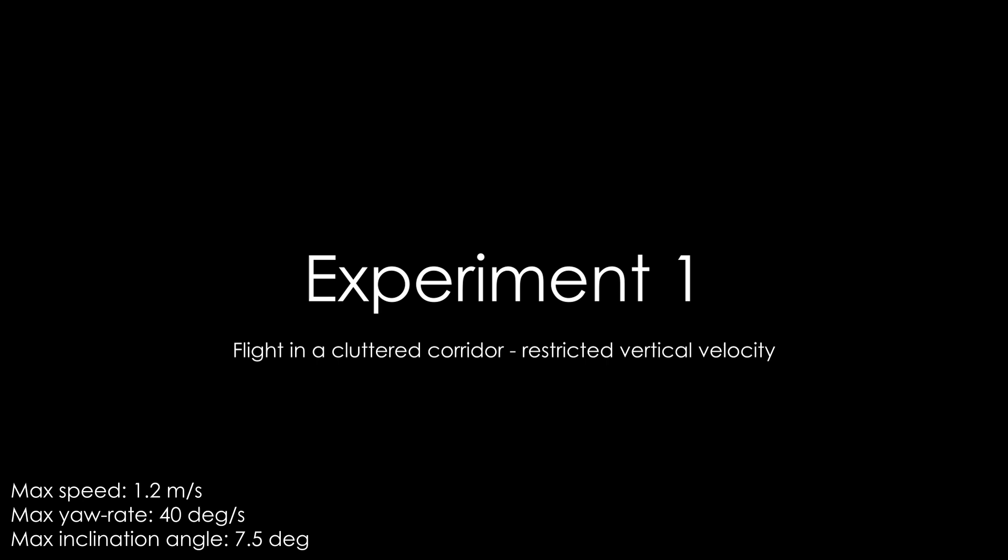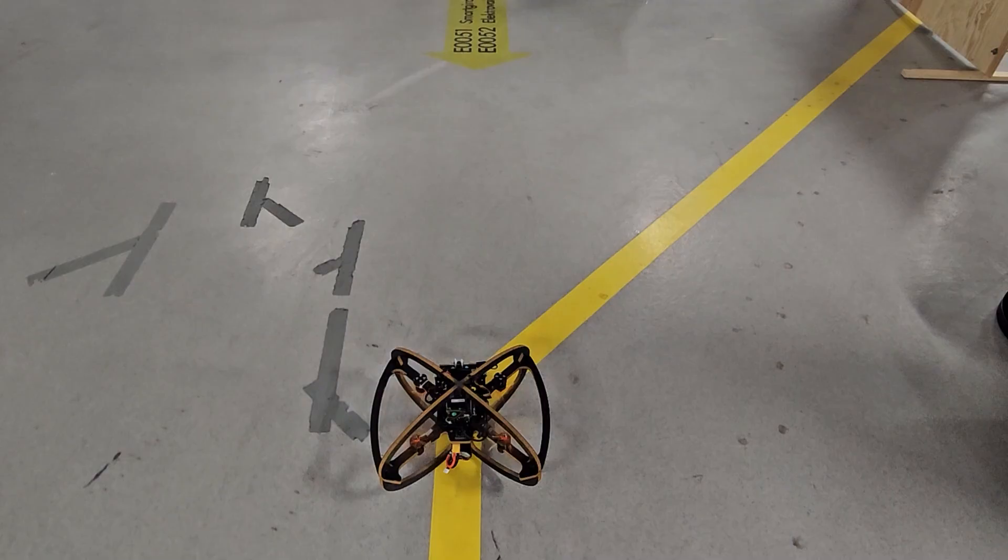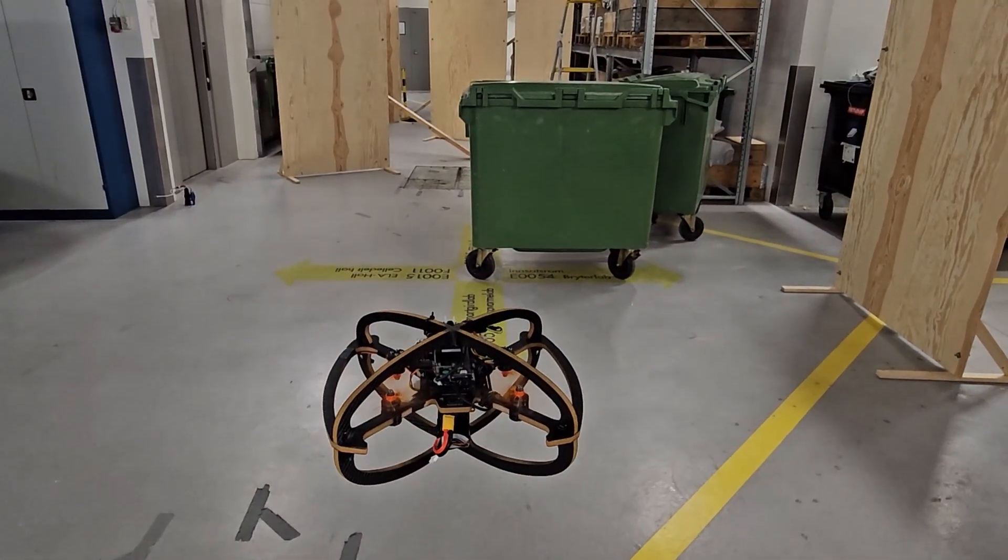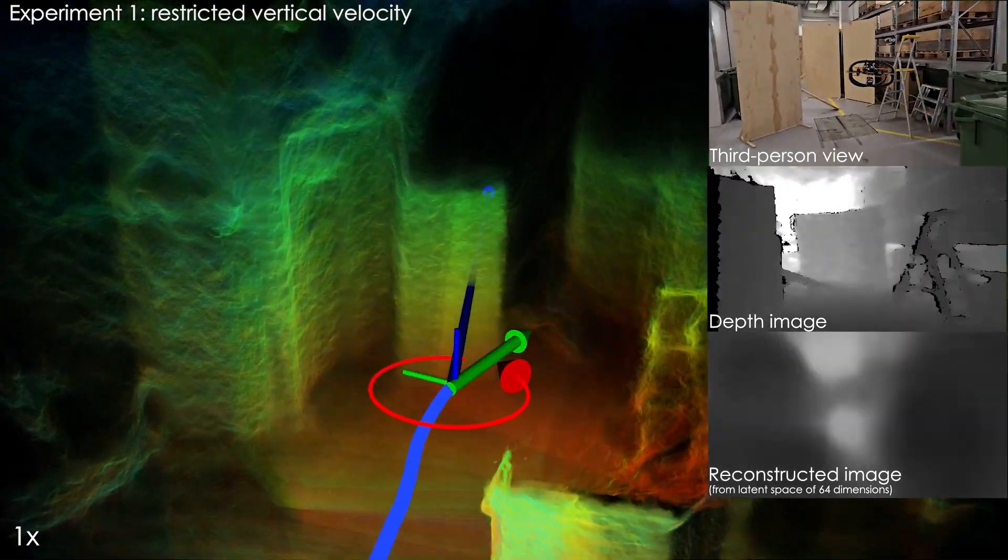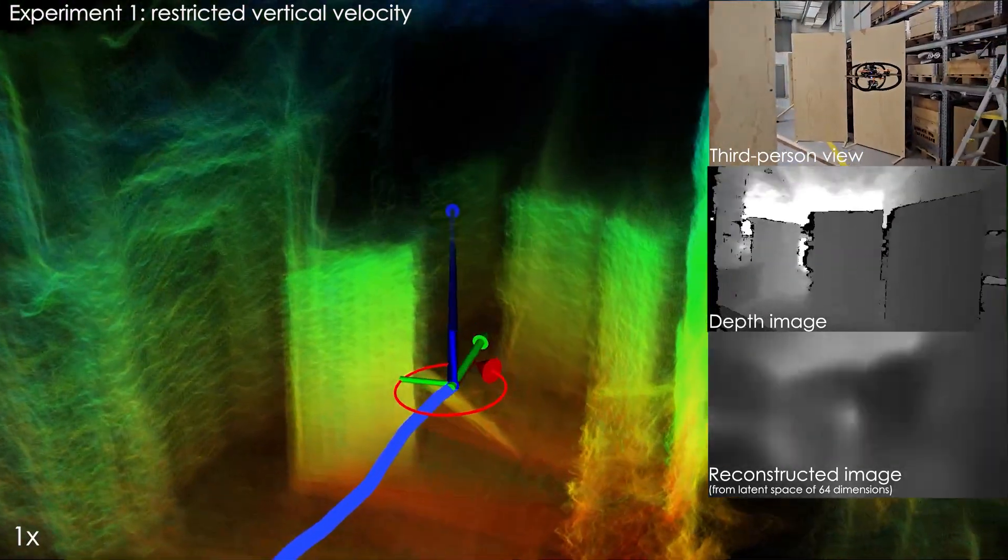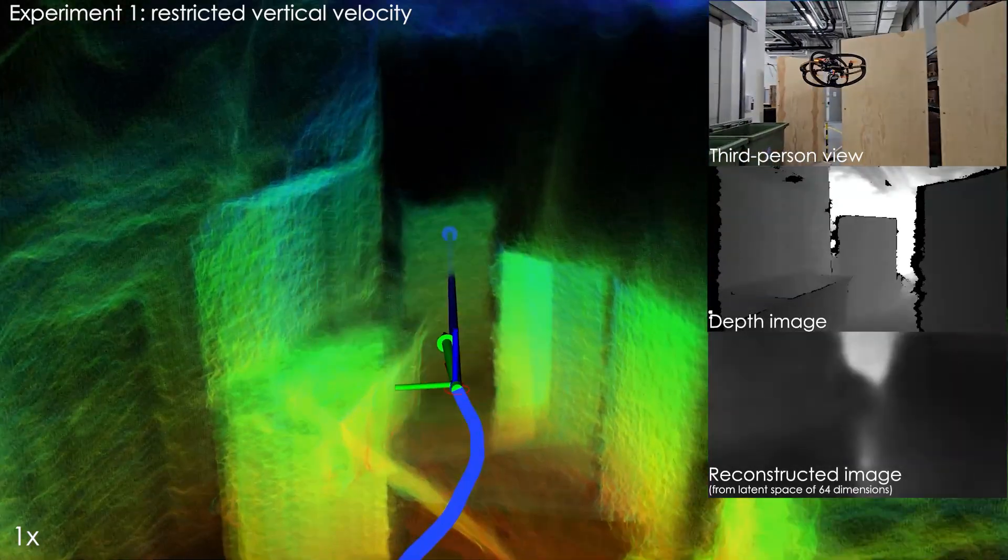We also verify our proposed approach with three real-world experiments. In the first experiment, an aerial robot is tasked to navigate a cluttered indoor environment with its vertical velocity restricted. The robot accelerates and decelerates to navigate to the goal despite sensor noise and invalid pixels in the real-world depth images.